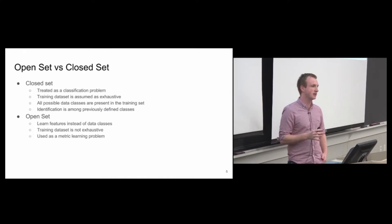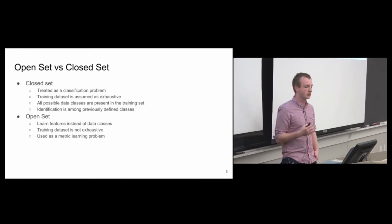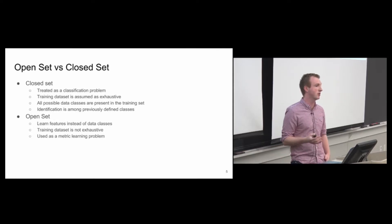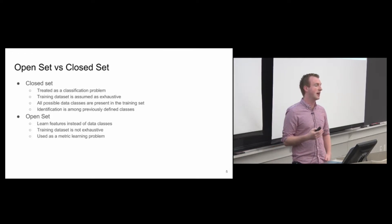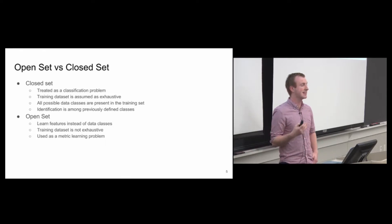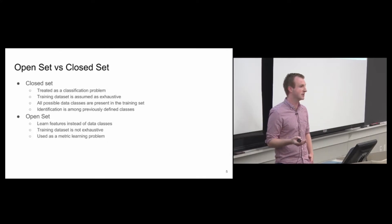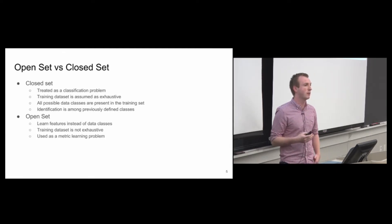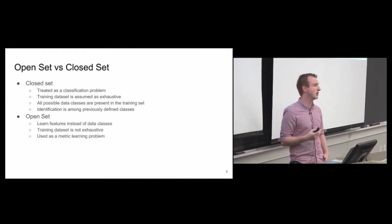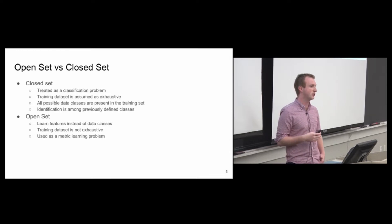One thing we're talking about in this assignment that we haven't really talked about before is open set versus closed set problems. Generally what we've been doing so far in the course is closed set problems, where you have a training set and we believe that it is generally distributed the same way as the test data, and we definitely assume they're the same classes in the test set as in the training set. Here that's not necessarily so — we're learning a dataset of a fixed number of speakers, and then we're going to do verification on a dataset that is likely disjoint from our training set. So the goal is to learn features that are general enough such that they're not fitting to the inconsistencies of a specific speaker.